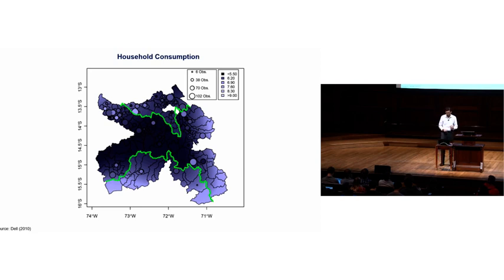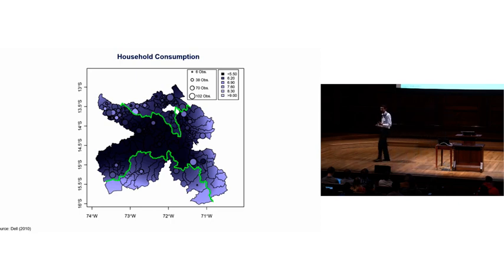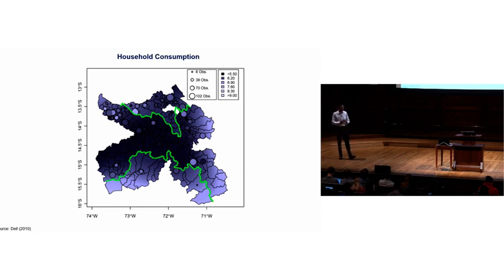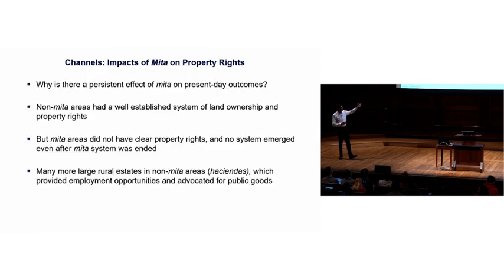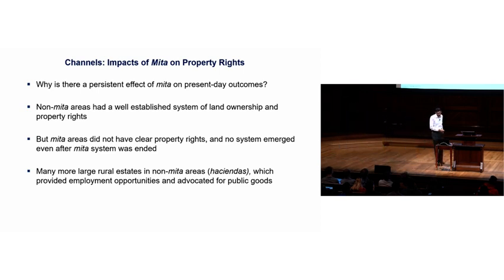Using data on household consumption — which is noisier because it requires survey data — you see a similar pattern: much lower levels of consumption within the Mita boundaries than outside.